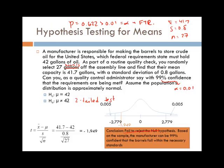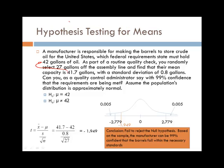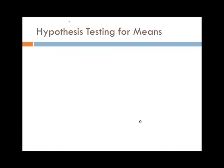Fail to reject the null, so based on the sample, the manufacturer can be 99% confident that the barrels fall within the standards. Because remember that the quality control person was saying that the standards might not be met. Remember that the standard was the null hypothesis. We wanted to make sure that we were double checking to make sure that they held enough. So even though the mean was 41.7, that was close enough to the goal of 42, so that we failed to reject it.